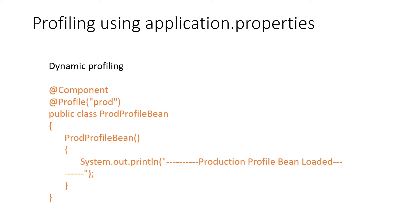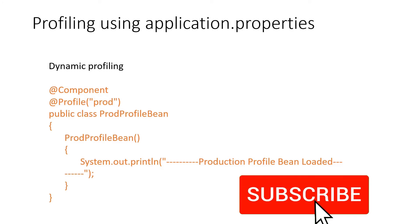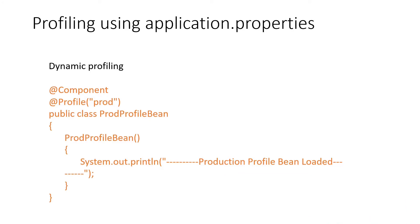One important thing to remember: the application.properties is embedded inside the jar, so every time you change it you have to restart the server. To avoid this, you can keep application.properties outside the jar and specify its location at startup, so you don't need to restart when properties change. We'll cover that in subsequent tutorials. If you like this explanation, please subscribe, share, and like this video — thank you.